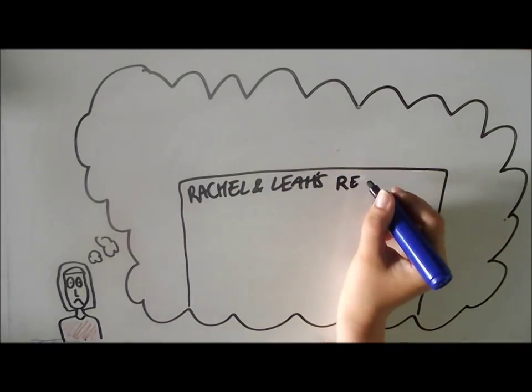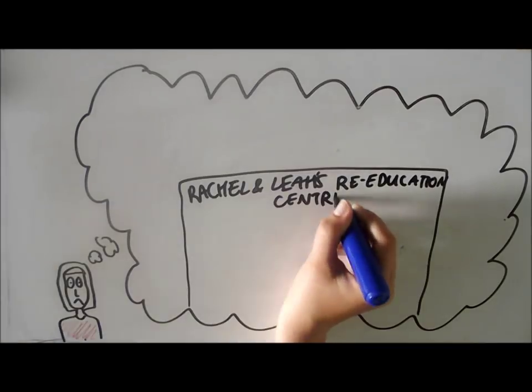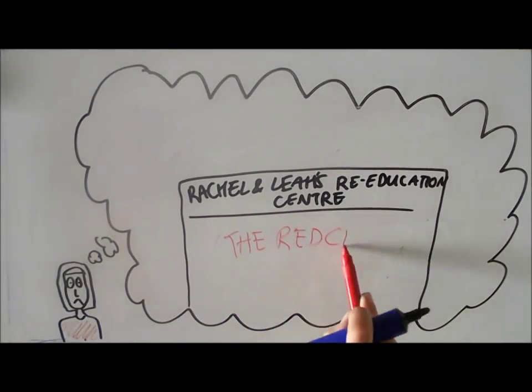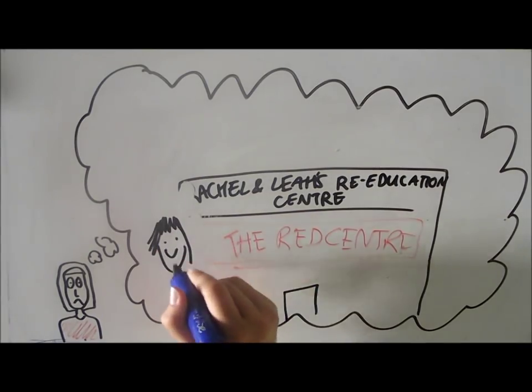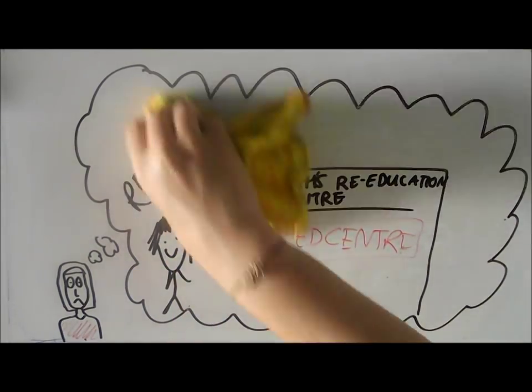After Offred gets captured, she's sent to the Rachel and Leah Re-Education Centre, which is called the Red Centre by its inhabitants. It's where women are re-educated to become handmaids and are taught that women are men's servants and that they should be solely concerned with bearing children. Moira's a rebel and she goes there and then escapes and Offred doesn't know what happens to her.